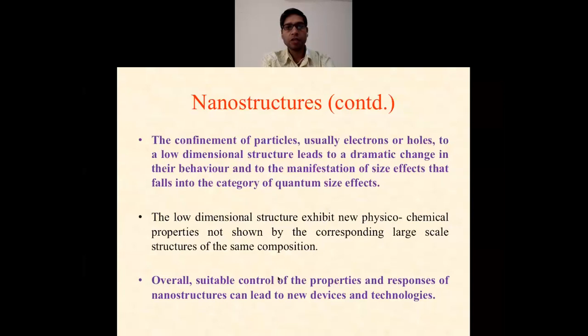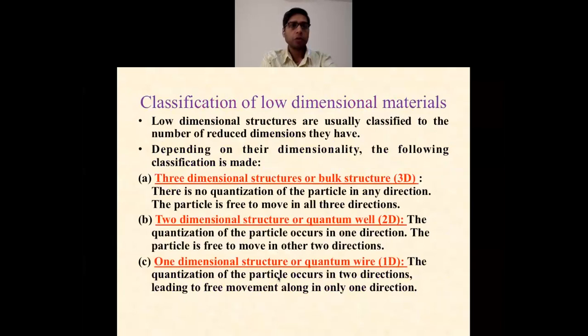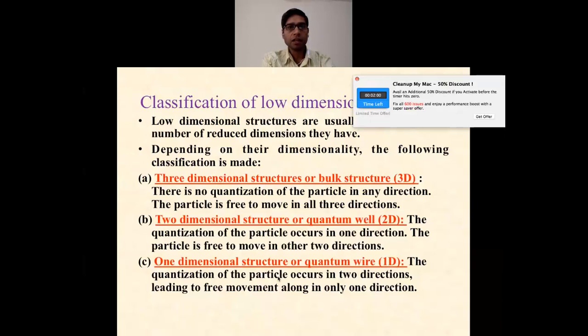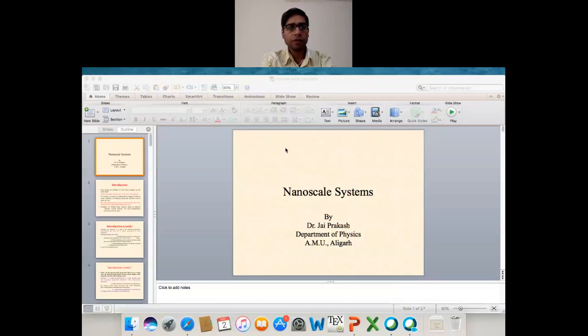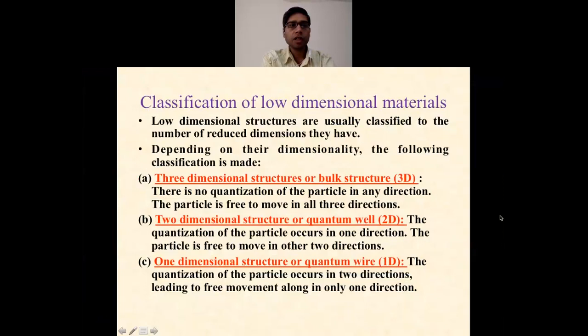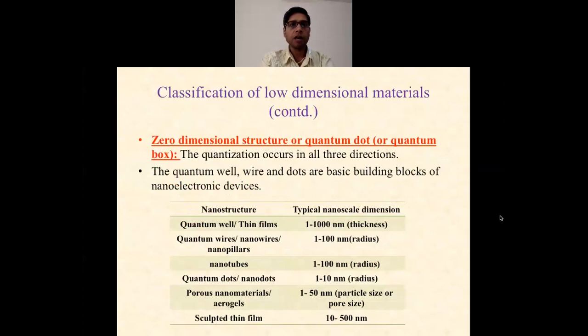Now the classification of low dimensions. It's very important to classify the low dimensional or nanoscale systems. Low dimensional systems are usually classified according to the number of reduced dimensions they have. Depending on their dimensionality, you can define on the basis of degree of freedom or confinement of the particles. If you talk about three-dimensional structure, that is the bulk structure. There is no quantization of the particle in any direction; the particle is free to move in all three directions. Two-dimensional structure or quantum well: the quantization of the particle occurs in one direction. The particle is free to move in the other two directions. We classify the nanoscale system on the basis of degree of freedom. If they are free in two dimensions, that is called two-dimensional. If they are free to move in one dimension, they are called one-dimensional. Zero-dimensional structure means the particle is not free anymore. The quantization occurs in all three directions.